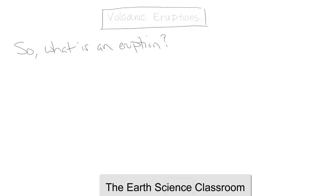Volcanoes have a very important role in long-term climate change, whether it is a positive feedback loop or a negative one, bringing it back to the steady-state equilibrium.